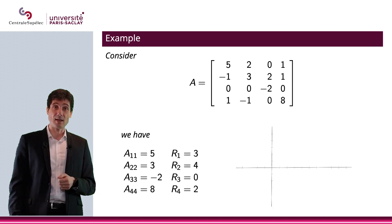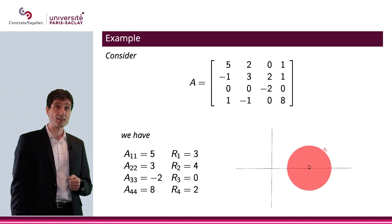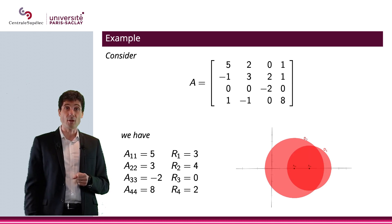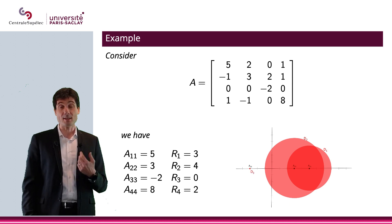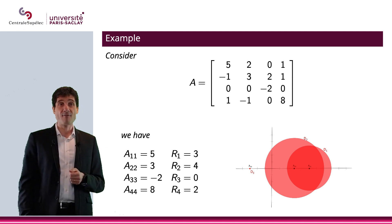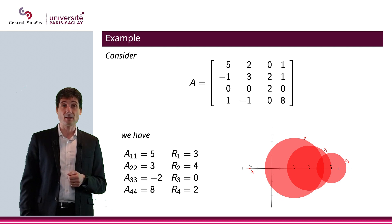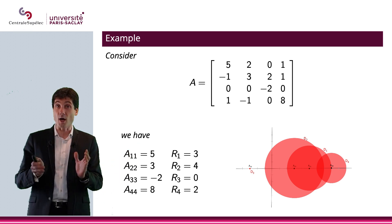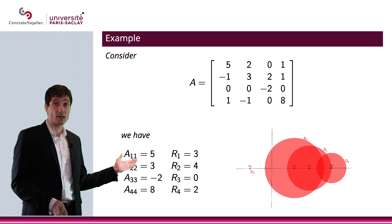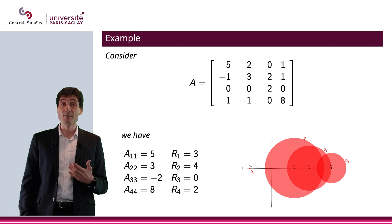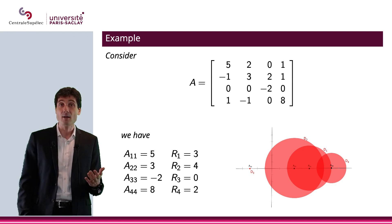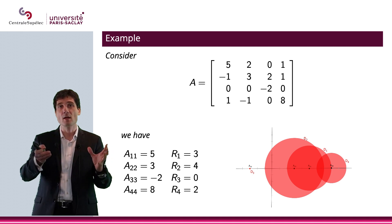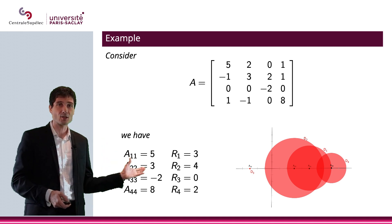Let's plot the disks on the graph. For A_11, I place a disk centered at 5 with radius 3. Then a disk centered at 3 with radius 4. Then a disk centered at −2 with radius 0 — that's just a point. And finally, a disk centered at 8 with radius 2. The eigenvalues will be somewhere in this red set. I don't know exactly where, but they must lie within it. For instance, if someone asks whether 10 + 10i can be an eigenvalue, the answer is no — it's not in the red set. So it doesn't give you the eigenvalues, but it gives you a location that can be more or less precise, telling you where they can possibly be.